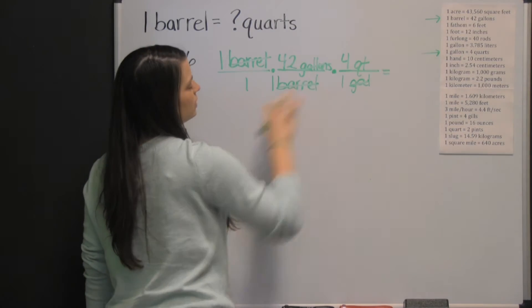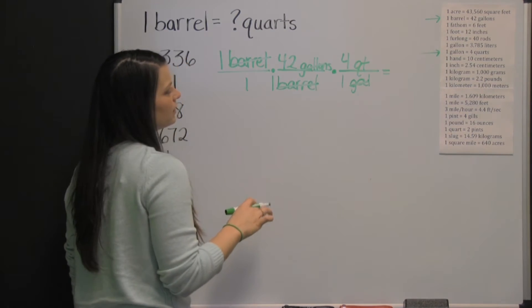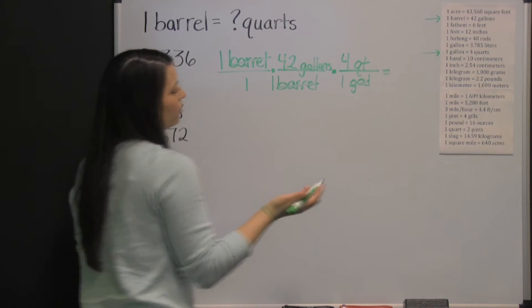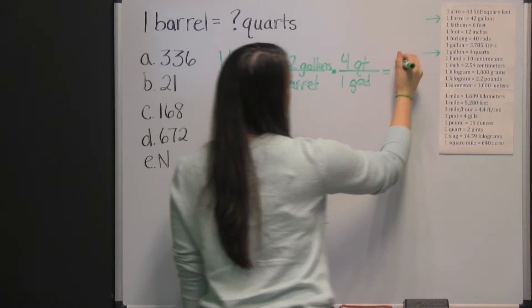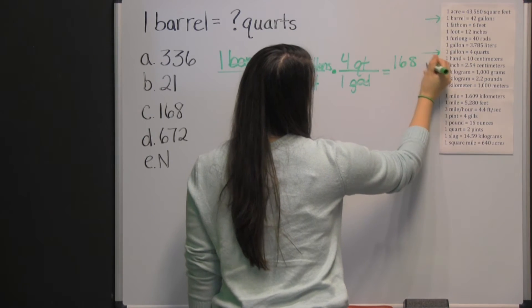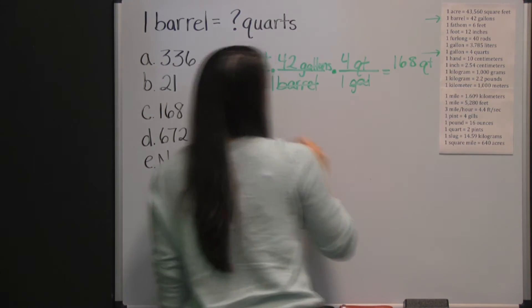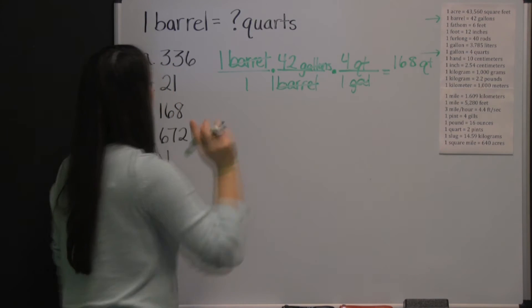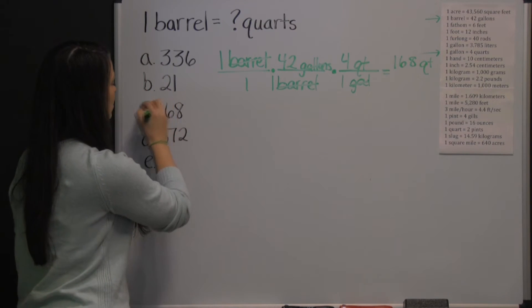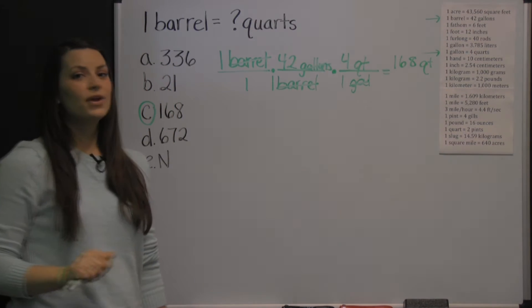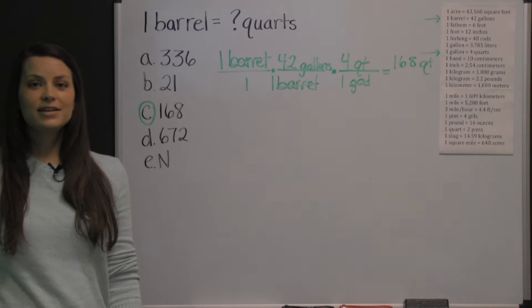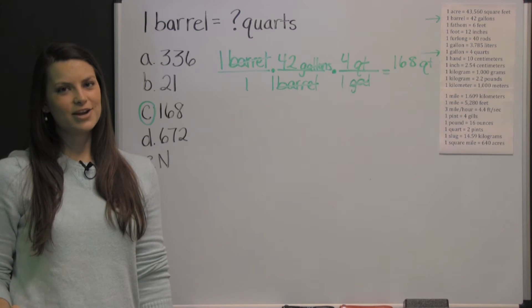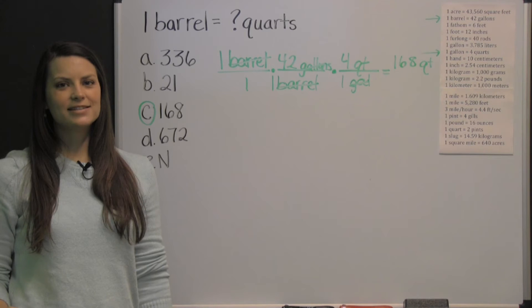One times 42 times 4: 42 times 2 is 84, and then you double 84 to get 168 quarts. Your denominator is one times one times one, which is one. So the answer is simply 168 quarts. There you have an example of a problem from the mathematical usage section on the CAST test.